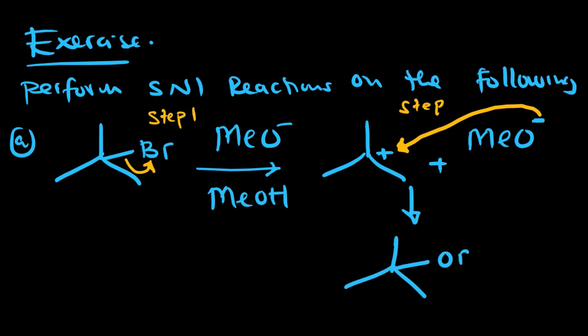What forms is the substituted product, plus the negatively charged leaving group in solution. Always remember: if you started with a net negative charge when the reaction began, you should also end with a net negative charge. Those are the two steps for SN1 reaction mechanisms — they are very straightforward. Step one is formation of the carbocation, and step two is nucleophilic attack.